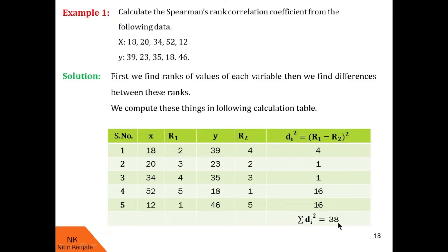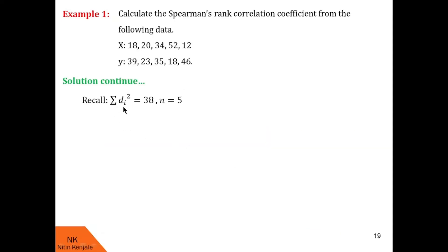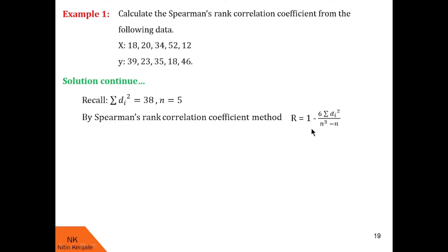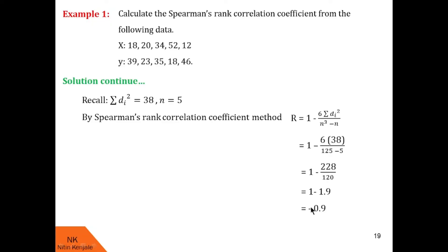Now let us carry forward these values. We have summation di-square equal to 38 and n equal to 5. Since none of the values of the variables are repeated, we use the first formula: R equals 1 minus 6 into summation di-square upon n-cube minus n. Substituting, we get 1 minus 6 into 38 upon 125 minus 5. Using a calculator, this equals minus 0.9. So Spearman's rank correlation coefficient for the given data is minus 0.9.